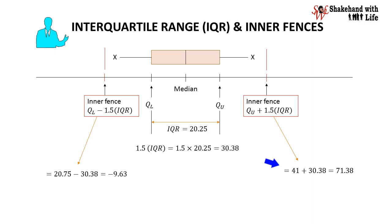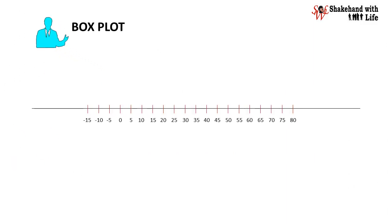Now we will draw the box plot for the given data. First, we will prepare a scale of 5 starting from minus 15 to 80. Mark the vertical lines for lower quartile Q1 at 20.75, for median at 27 and for upper quartile Q3 at 41. Complete the box by meeting the vertical lines from lower quartile to upper quartile.